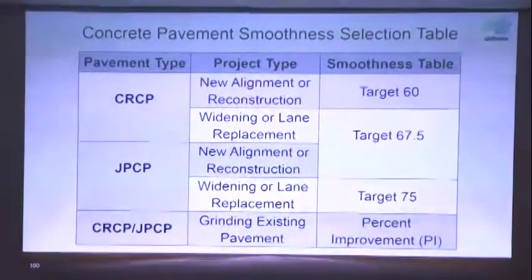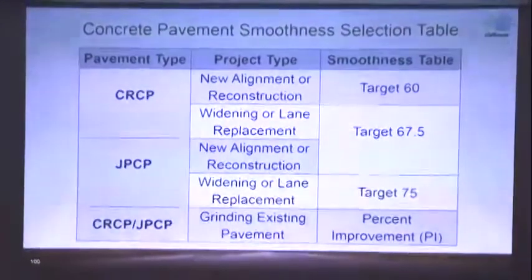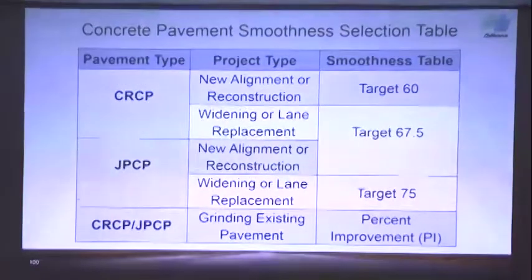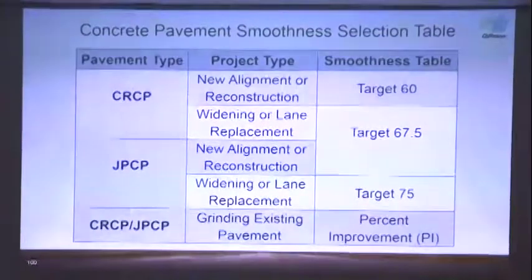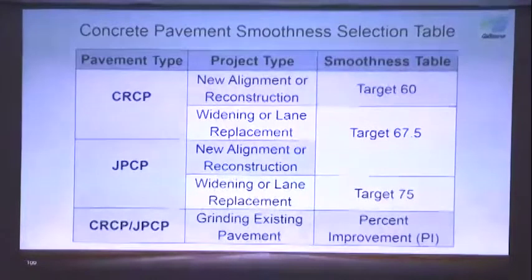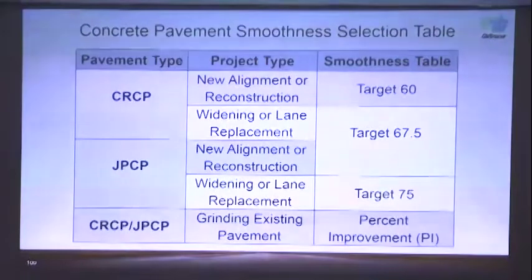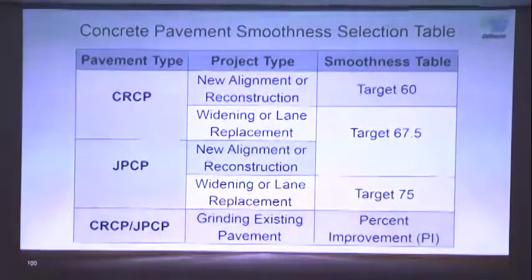This is the concrete pavement smoothness selection table, broken down into pavement type, project type, and smoothness, and the specific smoothness table. The pavement types are CRCP and JPCP. Project types are new alignment or reconstruction, widening or lane replacement, and grinding existing pavement. The four types of smoothness tables are Target 60, Target 67.5, Target 75, and Percent Improvement.